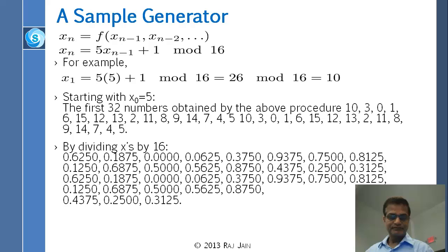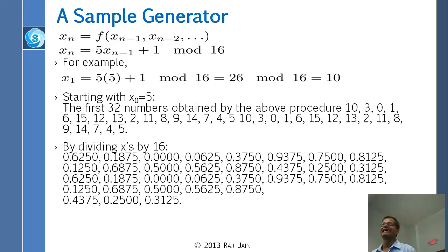Randomness is the issue. There are several chapters in this simulation topic: a chapter on testing random number generators, a chapter on random variates, and many others. This chapter on random number generation is the most important of all.